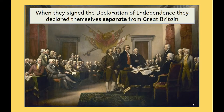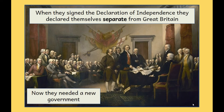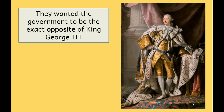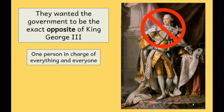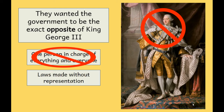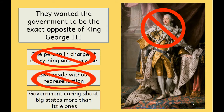When they signed the Declaration of Independence, they declared themselves separate from Great Britain, and that means they needed a new government — some form of laws, rules, and structure for America to survive on its own. They wanted to make the government exactly the opposite of what King George III had done. King George made one person in charge of everything and everyone — they didn't want that. King George made laws without the representation of the people — they didn't want that. And the government cared more about big colonies like Virginia than the little ones, and they didn't want that either.